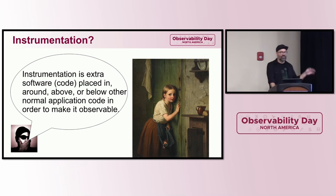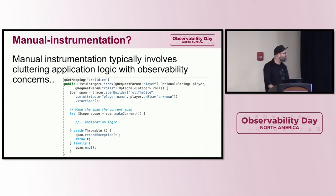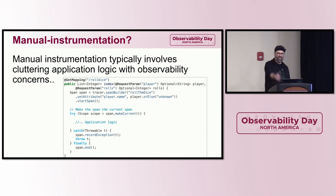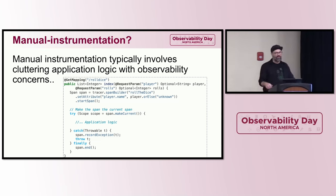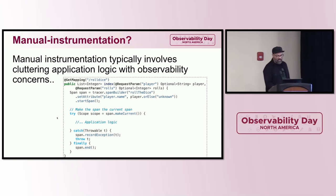Knowing what instrumentation is begs the question: what is auto instrumentation? You might have heard of manual instrumentation, where you do it the hard way. For many years a lot of us did this the hard way — writing code to generate your telemetry, incrementing counters, generating your own telemetry, building tracing by hand. It was a nightmare. There's still plenty of uses for this, but it shows how much code you have to craft by hand just to get your application logic going.